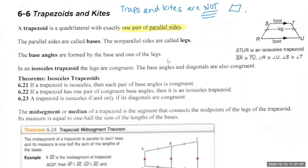The parallel sides do have a special name. The top and the bottom that happen to be parallel are called bases. So you have bases, and then you have legs of a trapezoid — the legs are the non-parallel sides. We also refer to things just like with isosceles triangles as base angles.